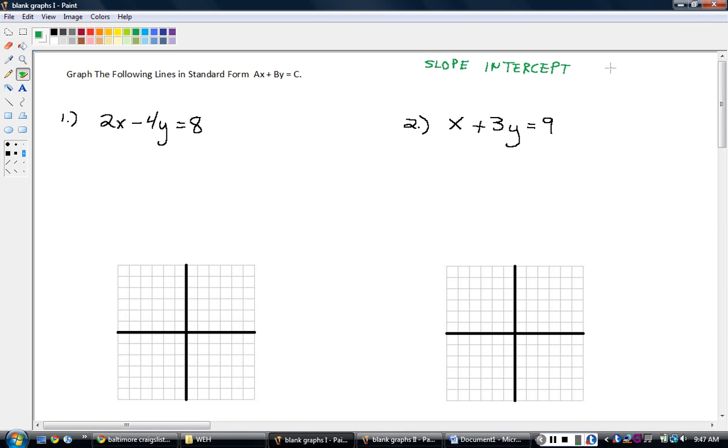Slope-intercept looks like this: Y equals MX plus B. Remember that? Where M is the slope of the line and B is the intercept. This is next chapter, we're not going to do this yet, but I just want to show you that we'll deal with lines in a couple different ways.